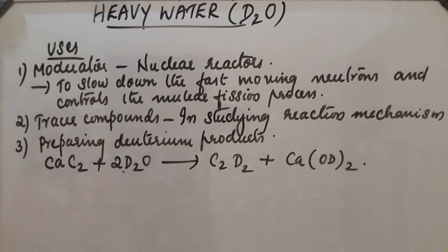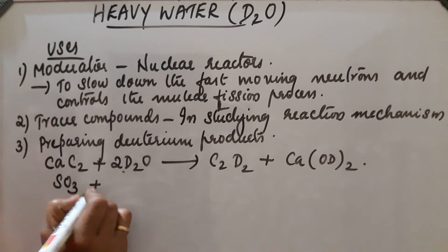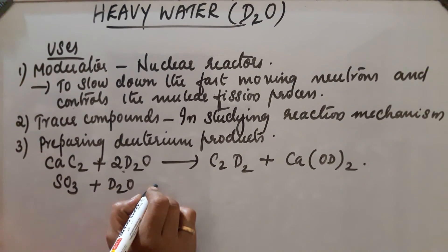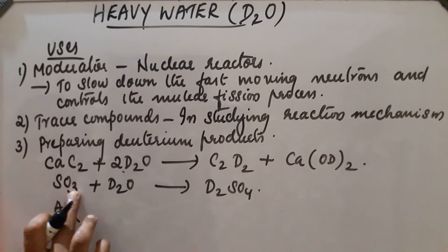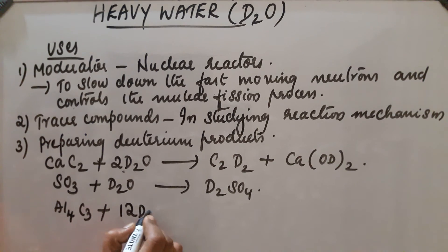We can prepare deuterium products through reactions like SO3 plus D2O gives D2SO4. Aluminum carbide Al4C3 on reaction with 12 D2O is converted into CD4.